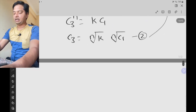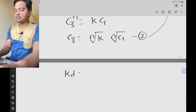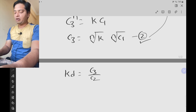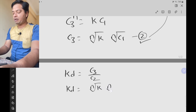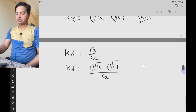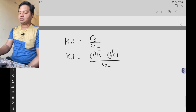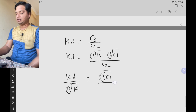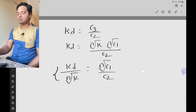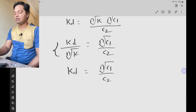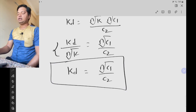Substituting equation 2 into equation 1, kd equals c3 by c2, and c3 is the nth root of k multiplied by the nth root of c1. So kd equals nth root of k multiplied by nth root of c1, all divided by c2. Solving for kd, we get: kd divided by nth root of k equals the nth root of c1 by c2. Since constant divided by constant is a constant, we can write: distribution coefficient equals nth root of c1 by c2. This is the final derived equation when the molecule is associating.